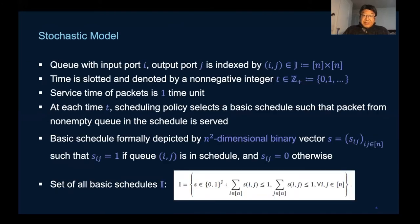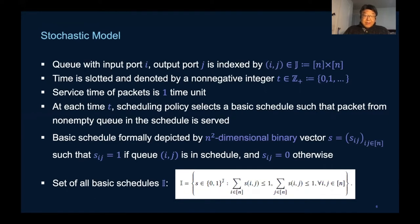Let's start with some basic notations. Input ports are generally indexed by i and output ports by j. Time is slotted and indexed by t. In each time slot, the scheduling policy selects a basic schedule.